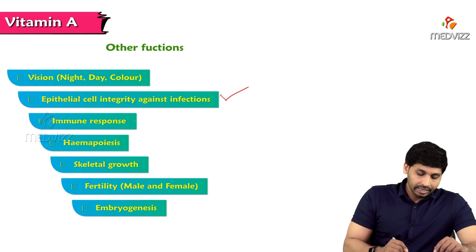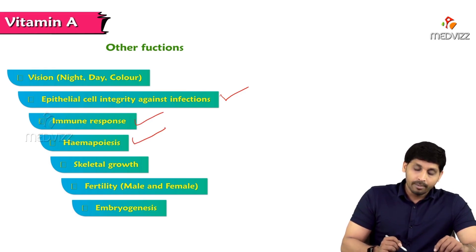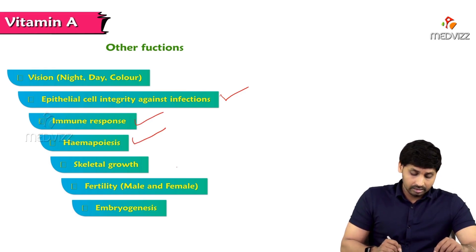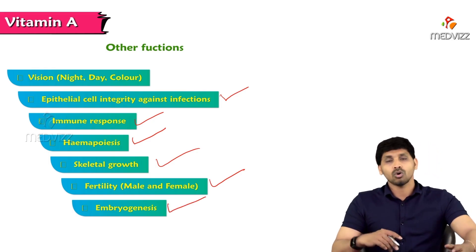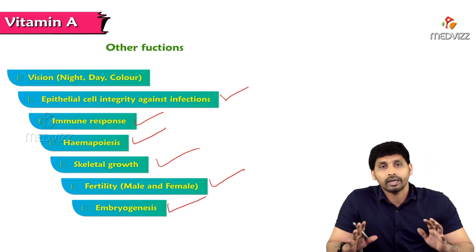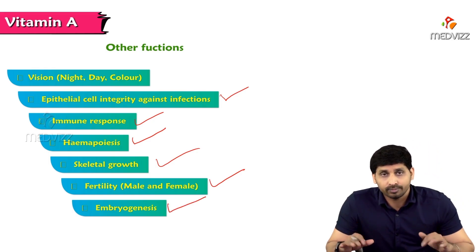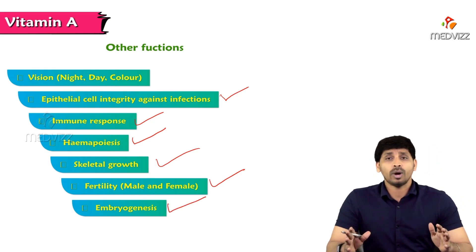Other functions of Vitamin A include night vision, epithelial cell integrity, immune response, hematopoiesis, skeletal growth, fertility, and embryogenesis. These are all the important functions of Vitamin A.